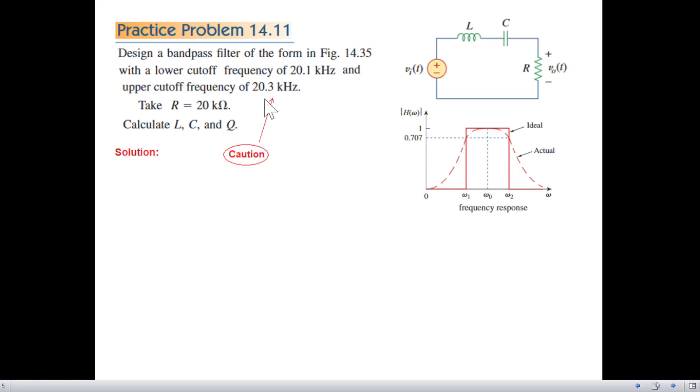Coming back, keep in mind that we have to find L, C and Q. And one caution: the values given here are in kilohertz whereas we are talking of omega which is the radian frequency. So I hope you remember that the radian frequency omega is given by 2 pi into frequency.